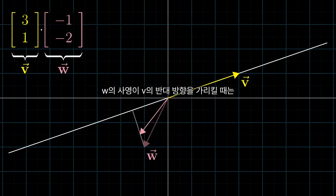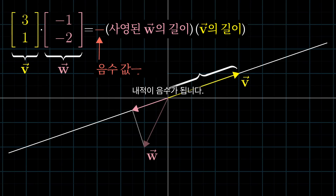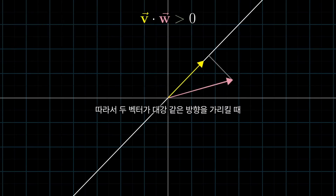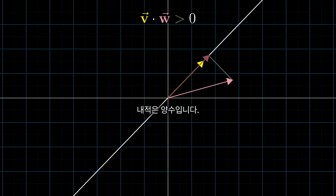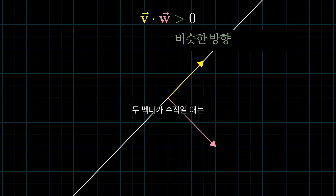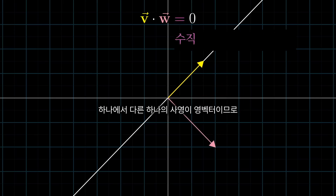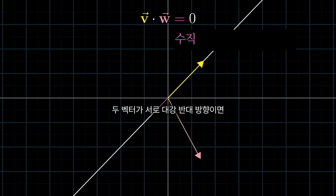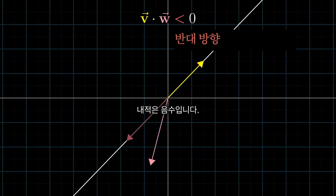Except when this projection of w is pointing in the opposite direction from v, that dot product will actually be negative. So when two vectors are generally pointing in the same direction, their dot product is positive. When they're perpendicular — meaning the projection of one onto the other is the zero vector — their dot product is zero. And if they point in generally the opposite direction, their dot product is negative.